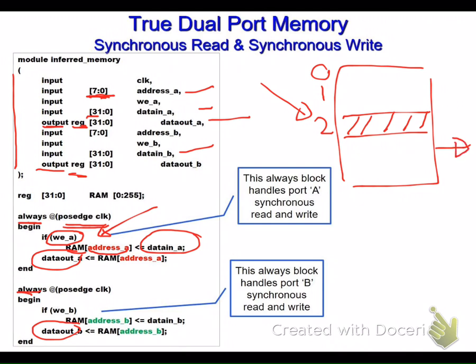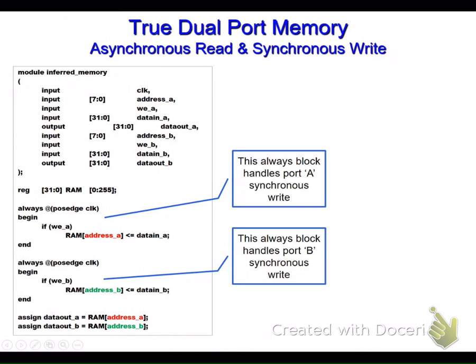At the output, we show whatever is at that particular slot. We do exactly the same for port B — writing to a certain address via the other port and reading with the same concept. This writing and reading for both ports is done synchronously. Now, what if we want to do the reading asynchronously?